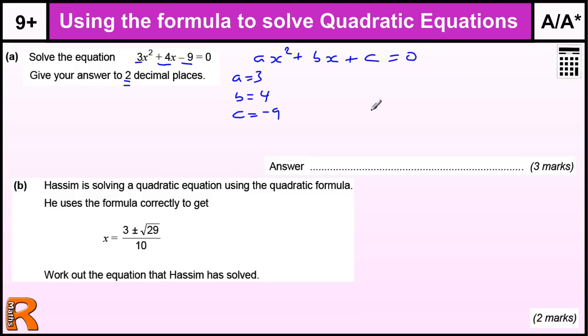So the formula which is given at the front of the exam is minus b, so minus 4, plus or minus (that means there's one answer with a plus, one answer with a minus), the square root of b squared, which is 4 squared which is 16, minus 4ac, 4 times 3 times minus 9, so minus 4 times 3 times minus 9, all over 2a.